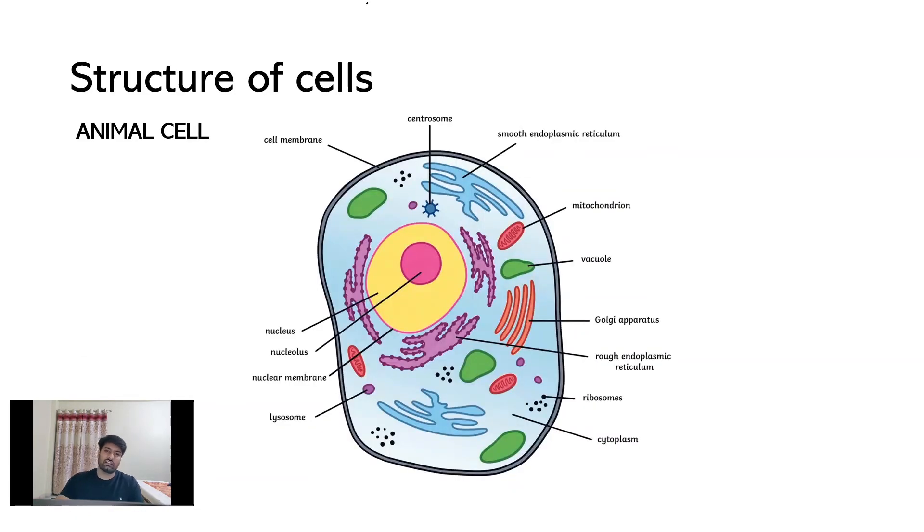Now, moving on to the next slide, structure of cells, specifically animal cell. As I discussed earlier, the main structure that encloses the whole cell is called as cell membrane or plasma membrane, which we can see here on the boundary of animal cell. Inside the animal cell, cytoplasm is present, which is the fluid present inside the cell containing all different cell organelles.